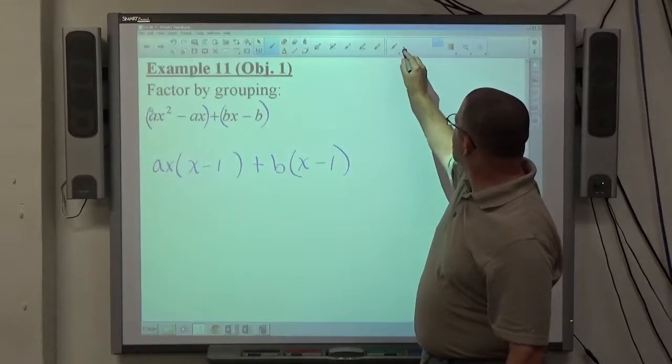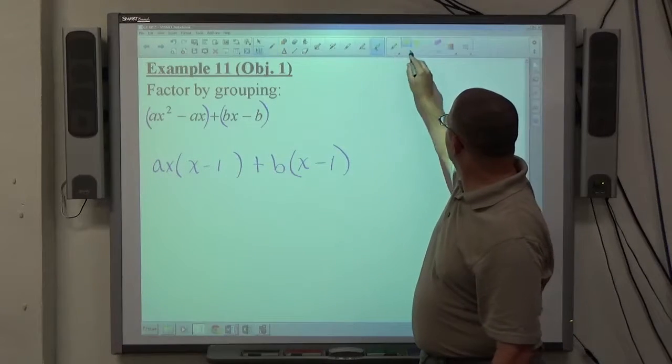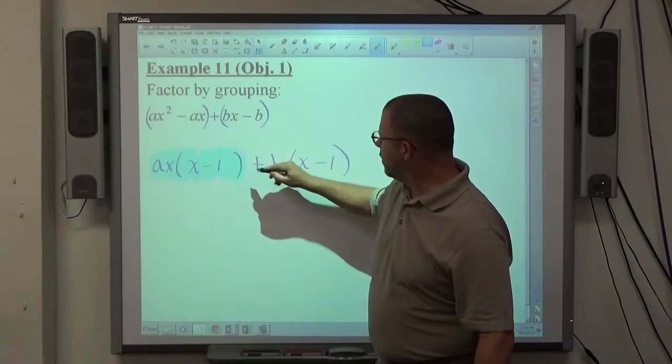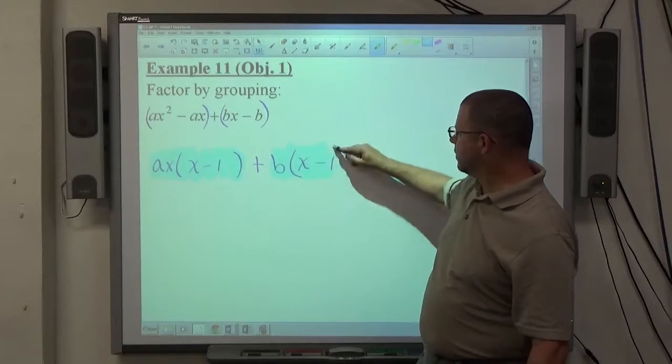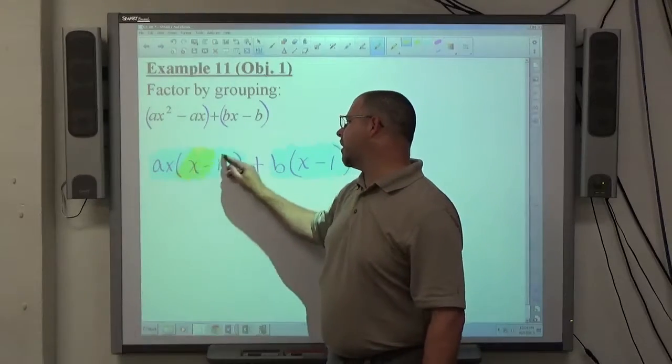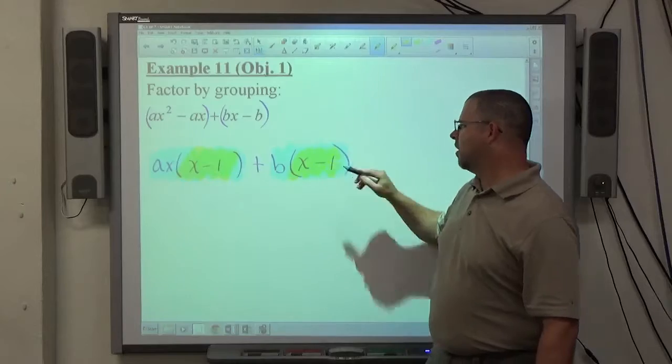And at this point, we have a binomial. This is term 1. This is term 2. What you're supposed to notice about the binomials is they have a common binomial factor of x - 1.